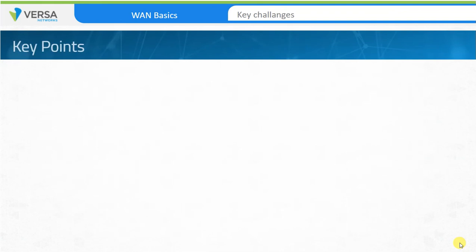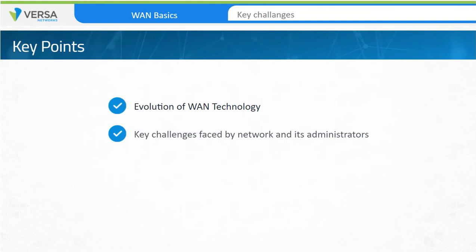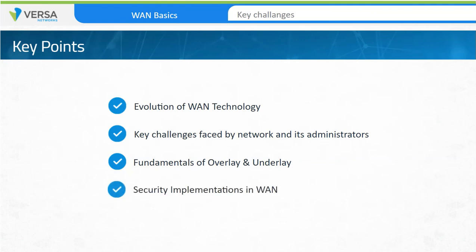This is the end of Module 1 of the Versa Essentials series. In this module, we looked at how WAN architectures and technologies have evolved, described some of the challenges that companies face with current WAN technologies, explored the fundamentals of overlay and underlay networks, and looked at security implementation in today's WAN. Thank you for your participation in this module, and we hope you found the session informative.